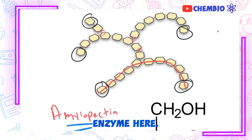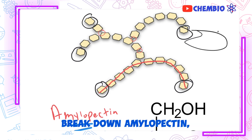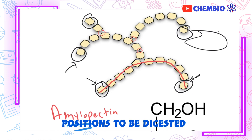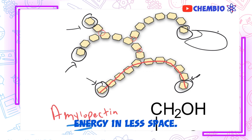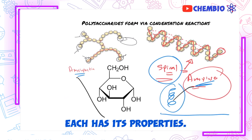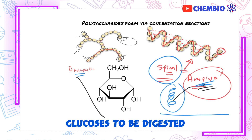Amylase is the enzyme that digests starch. When amylase breaks down amylopectin, you've got plenty of positions to be digested, and that provides more energy in less time. So again, starch is a combination of two molecules, each with its own properties: amylose, which saves space, and amylopectin, which provides more glucoses to be digested at once.